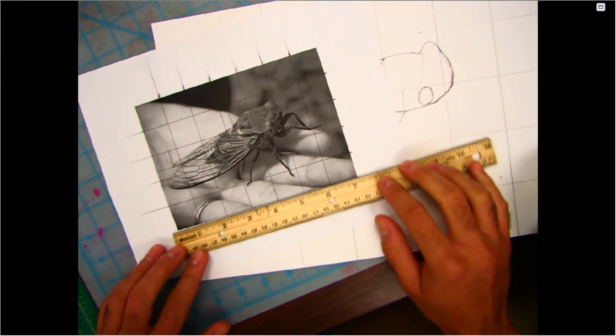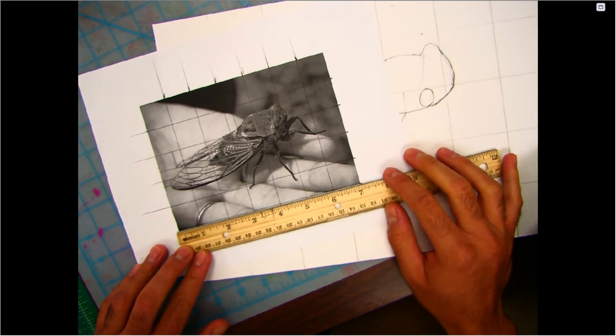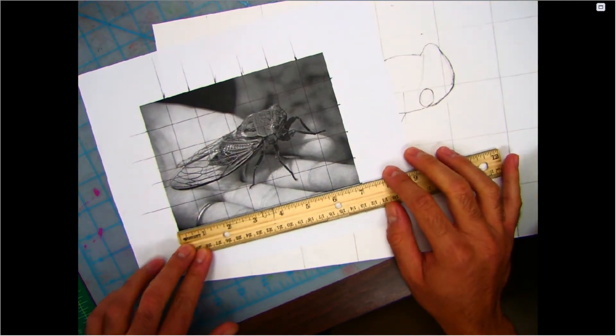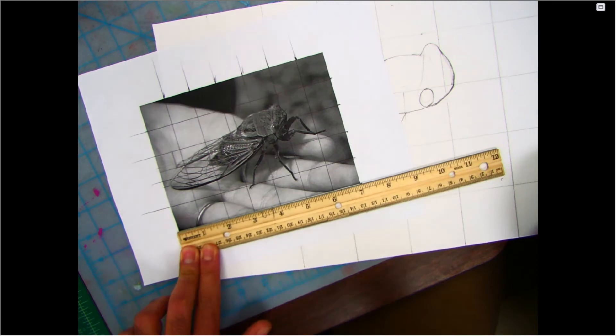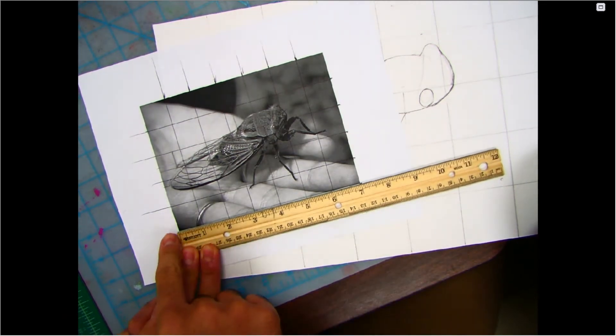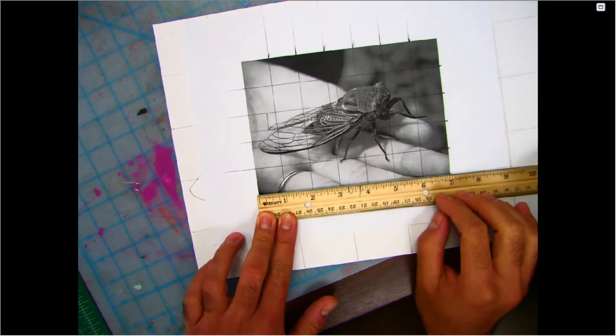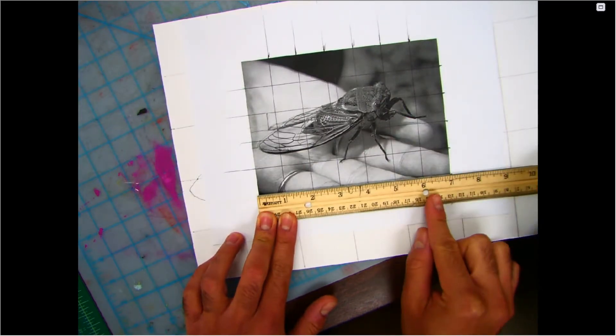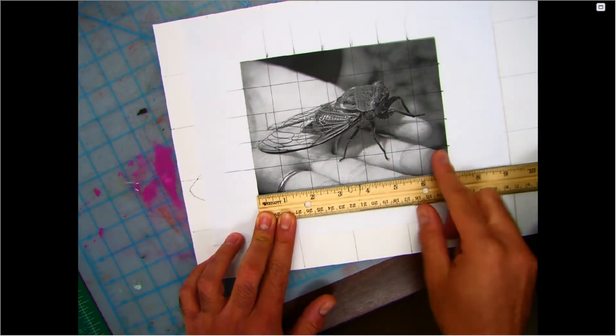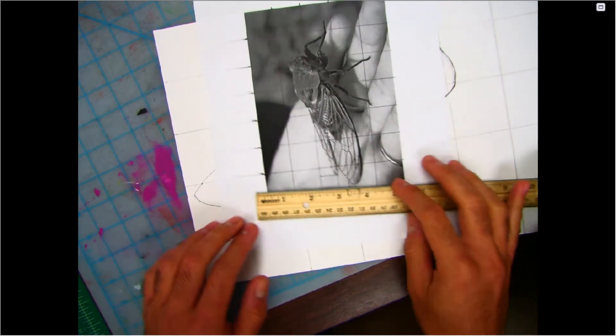So essentially what we did, we got the ruler. Remember how we lined it up? Whenever you use the ruler, you always start at the first notch. Line your image up between there. It should measure out seven inches. Notch off every inch. Do the same thing for every single side.